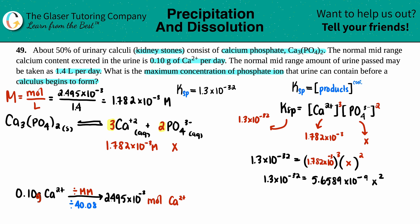So now we just need to solve for X. So just divide on both sides by that number, 5.6589 times 10 to the negative ninth. This goes bye-bye. And now you're just left with X squared. Beautiful. And now let's just do that math. 1.3 times 10 to the negative 32 divided by 5.6589 times 10 to the negative ninth. I get 2.297 times 10 to the negative 24th.